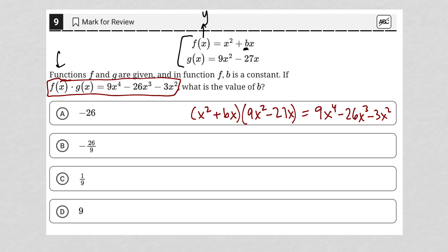So to simplify, I'm going to FOIL. First times first thing here, x squared times 9x squared would be 9x to the fourth power. And then the outer terms, x squared times negative 27x would be a negative 27x to the third power.